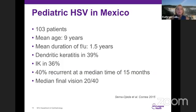Since we published our study, a group in Mexico presented similar results of about 100 patients — slightly older, average age nine, with a shorter duration of follow-up. They too found interstitial keratitis in quite a few patients, a high recurrence rate, and also showed reduced vision.